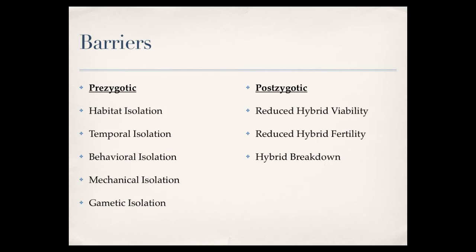Mechanical isolation is simply where the physical parts don't work — even if the animals tried, they could not mate with each other. Gametic isolation is where the sperm and egg are too different; they can't fuse with each other and can't form a zygote. All of these barriers are types of reproductive isolation that prevent a zygote from being formed in the first place.